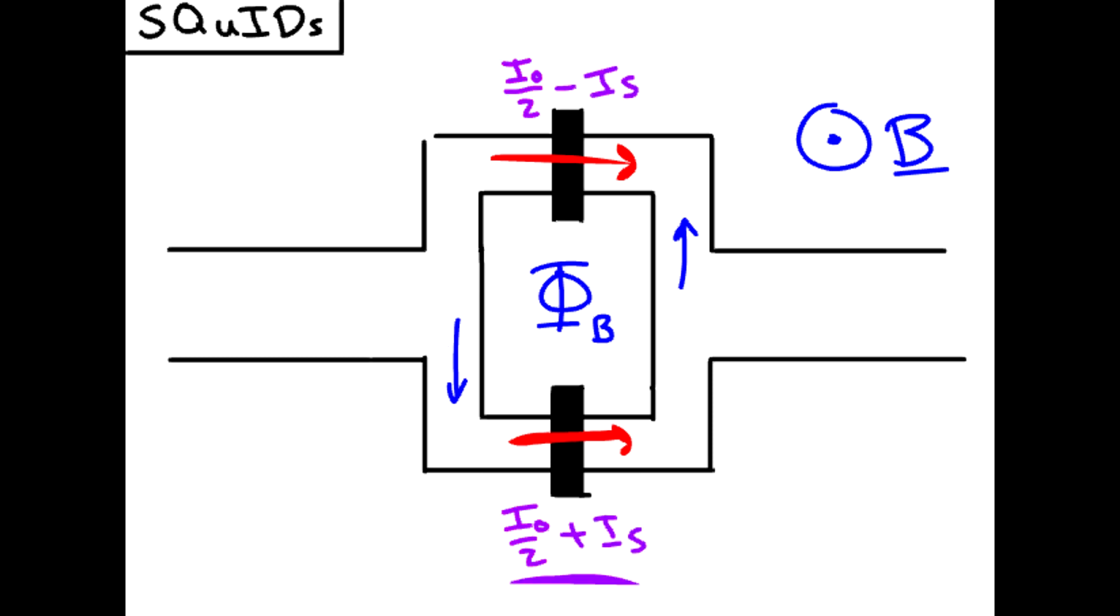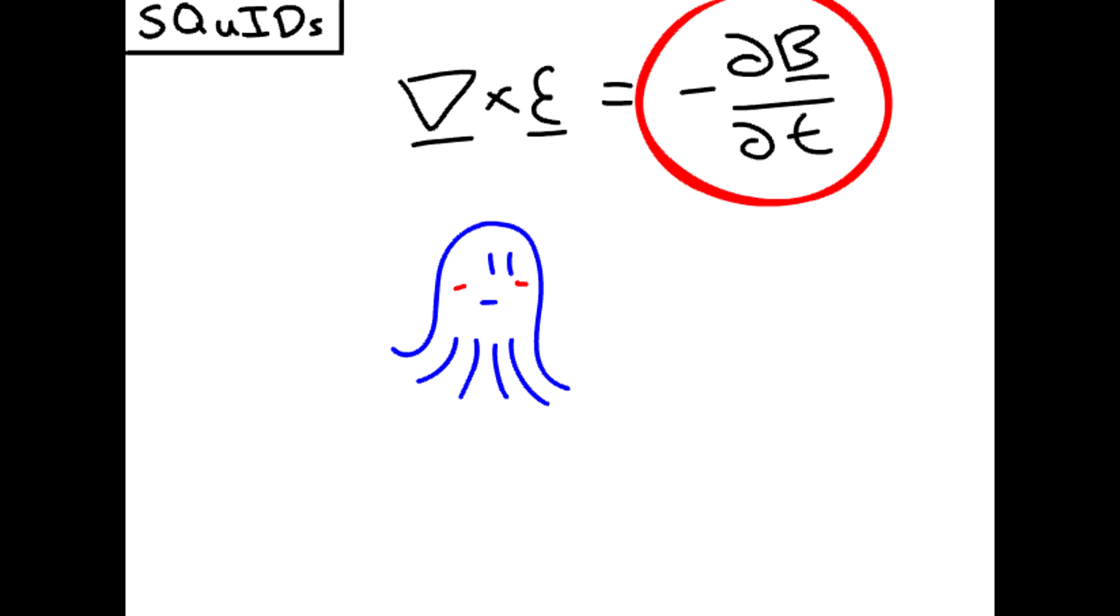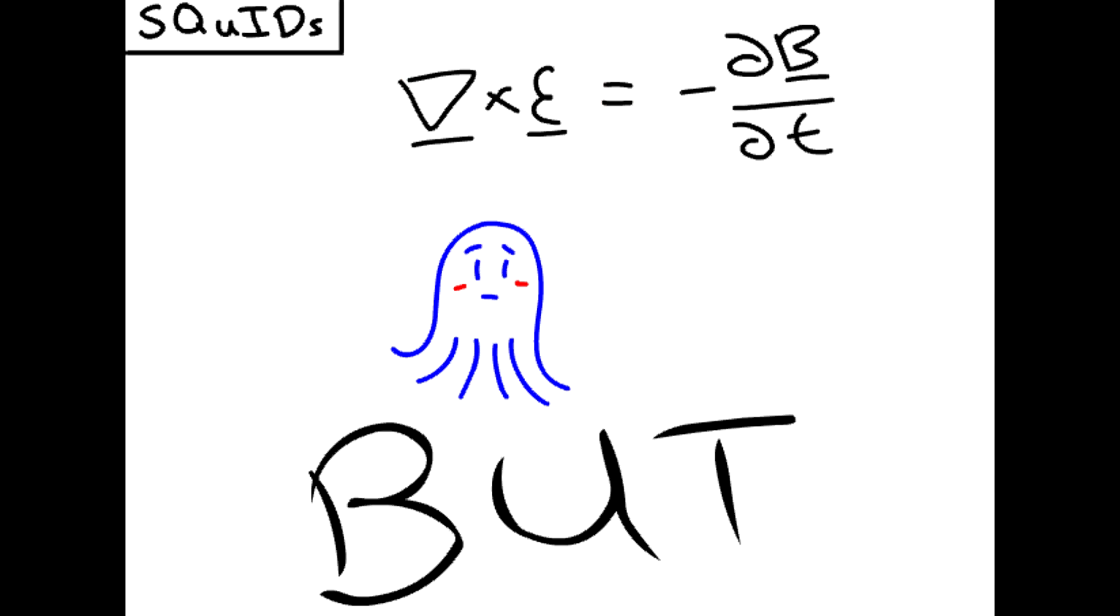This means that one side will have more current flowing than the other, and once one side has a current greater than IC, that Josephson junction will acquire a voltage. Hold on, we've already established that we need a changing magnetic field to cause an electric field. And that's correct! However, squids have an interesting phenomenon occur.